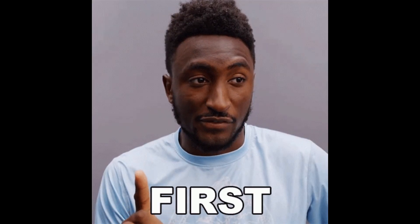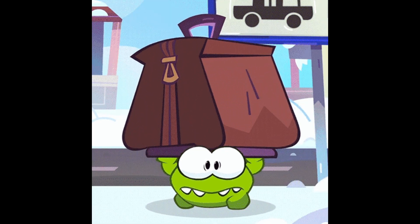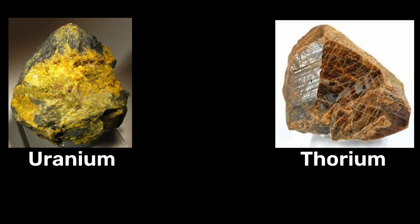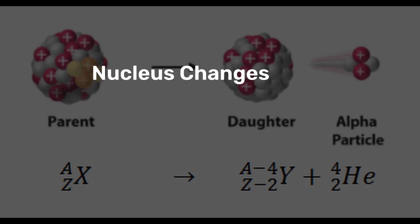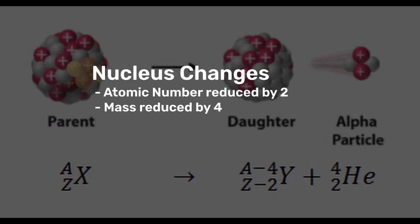There are three types of radiation. The first type is alpha, which occurs in very heavy nuclei like uranium and thorium, where the nucleus is so large that it becomes more stable by emitting an alpha particle. This will reduce the nucleus's atomic number by two and its mass number by four.